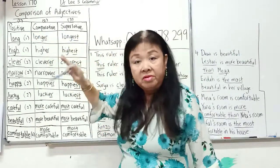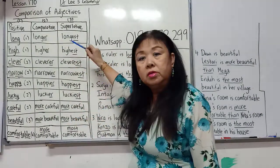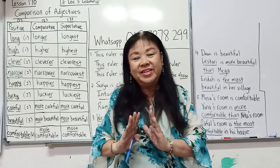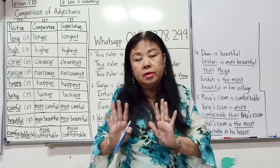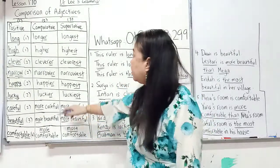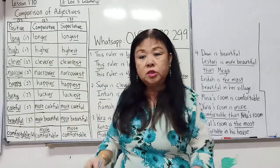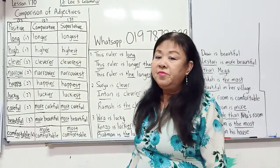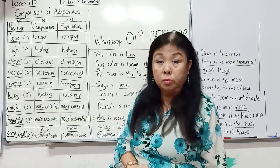Adjectives are divided into three: positive, comparative, and superlative. Positive means by itself — the person, animal, thing, or place, no comparing, just by itself. But when you use the comparative, it is comparing two. And if you are talking about three or more than three, then you call it the superlative.